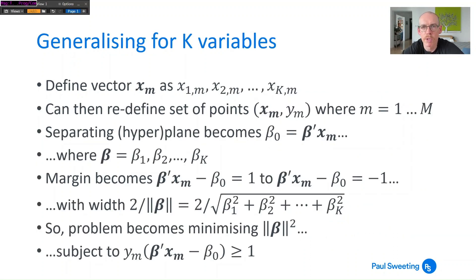So that's how it looks for two variables but it is pretty straightforward to generalize it for a large number of variables up to k variables as I called them here. Now the first thing you do is instead of just having x₁ₘ and x₂ₘ you go all the way up to xₖₘ and you define that as the vector xₘ which is a bold x lowercase m. And your set of points then becomes a bold xₘ where that's a vector comma yₘ where m is from 1 to capital M for the number of firms that you're looking at.